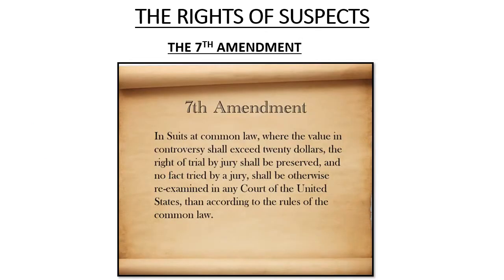The Seventh Amendment: in suits at common law where the value in controversies shall exceed twenty dollars, the right of trial by jury shall be preserved, and no fact tried by a jury shall be otherwise reexamined in any court of the United States than according to the rules of common law. Basically, even in civil disputes — like a car accident fender-bender — you could take that case to trial and have a jury decide it for you. In most civil disputes people just agree to pay a fine and bypass their right to a full jury trial, but according to the Seventh Amendment, if you wanted a jury and a full trial in a civil dispute, it is within your right.